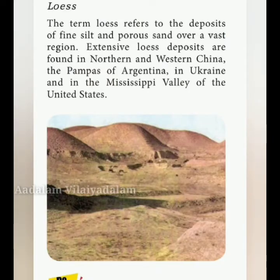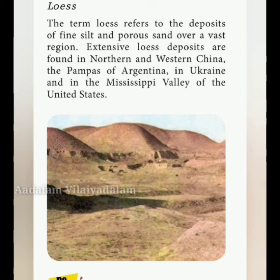The term loess refers to the deposit of fine sand over a vast region. Extensive loess deposits are found in northwestern China, the Pampas of Argentina, Ukraine, and the Mississippi valleys of the United States. Now we'll see about the three orders of landforms.